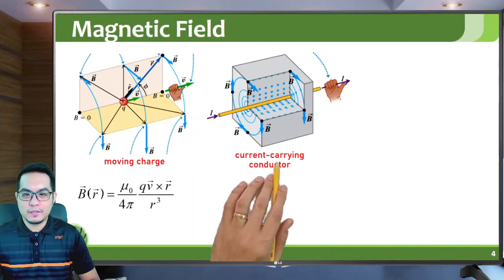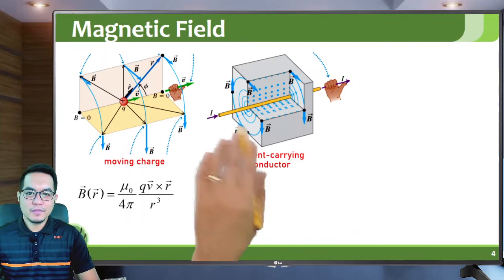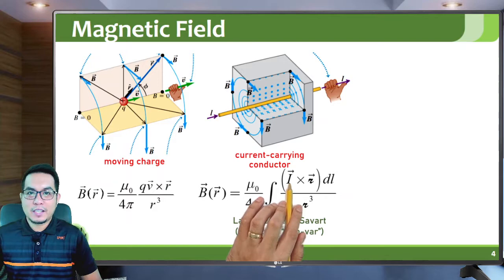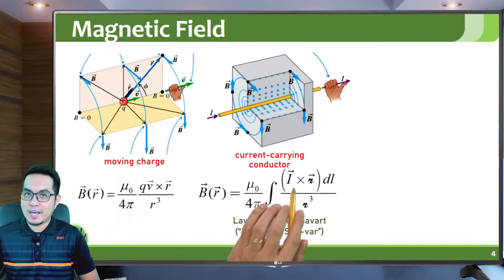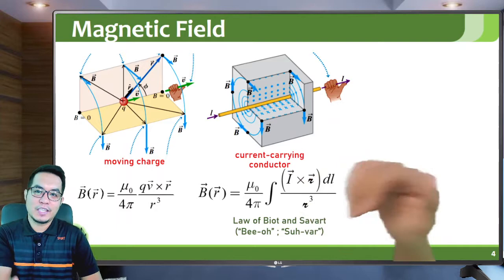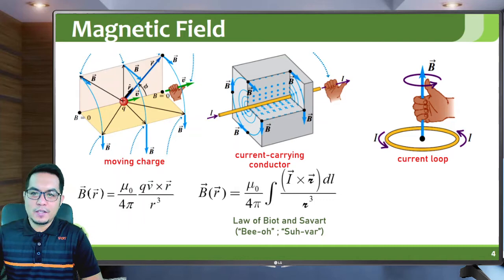If the charges are moving as a group and create a current, and you have a current-carrying conductor, then the magnetic field is given by the Biot-Savart law. I would like to emphasize that current is a vector — it has both a magnitude and a direction. This is not usually emphasized in basic electromagnetism, but we will emphasize it now. The direction of the magnetic field follows the right-hand rule: if this is the direction of the current, the magnetic field curls around the current — in cylindrical coordinates, that is the phi-hat direction.